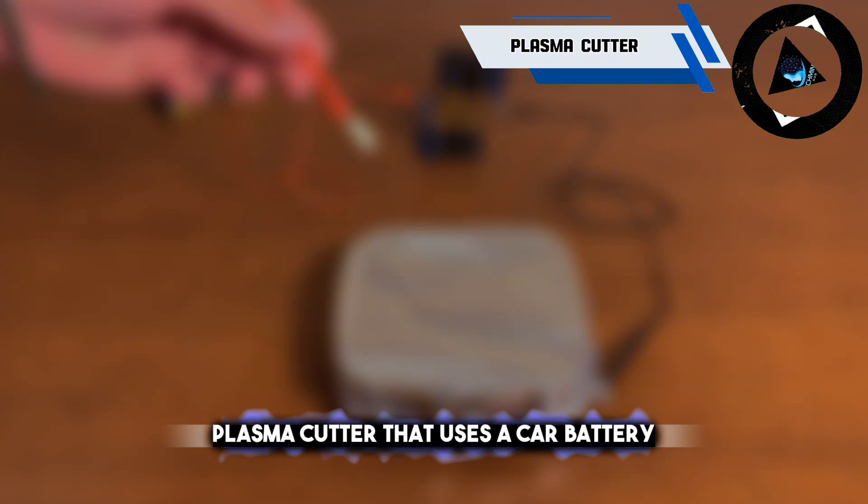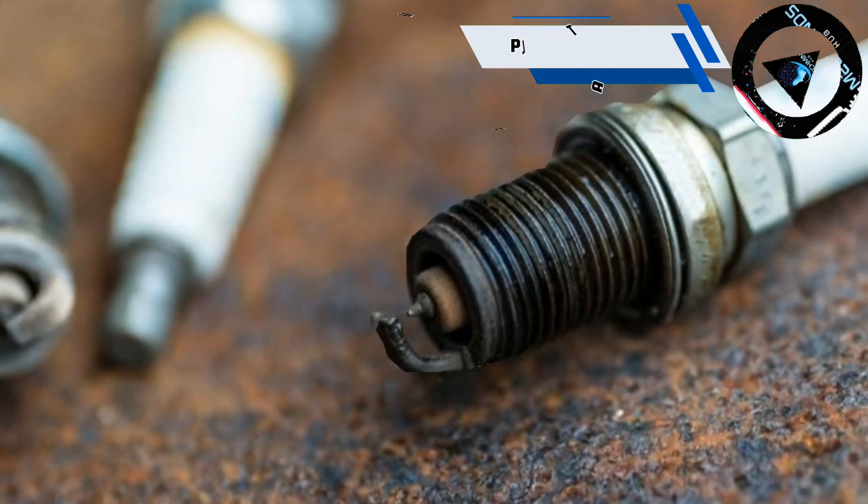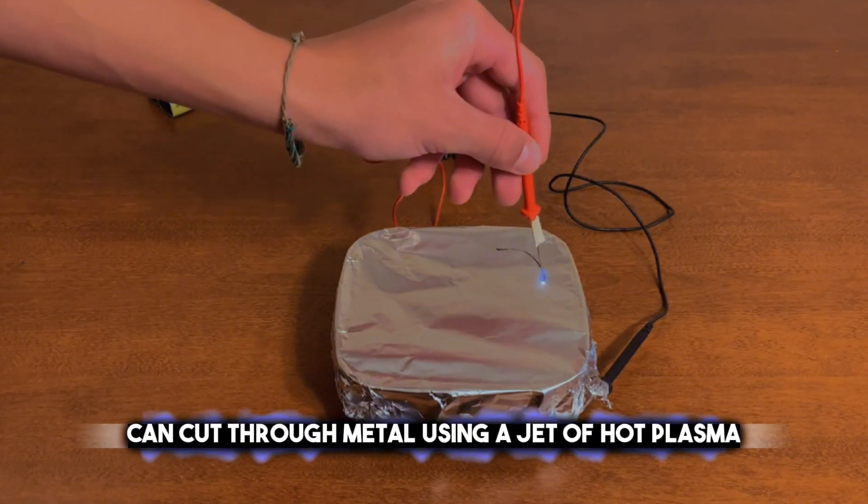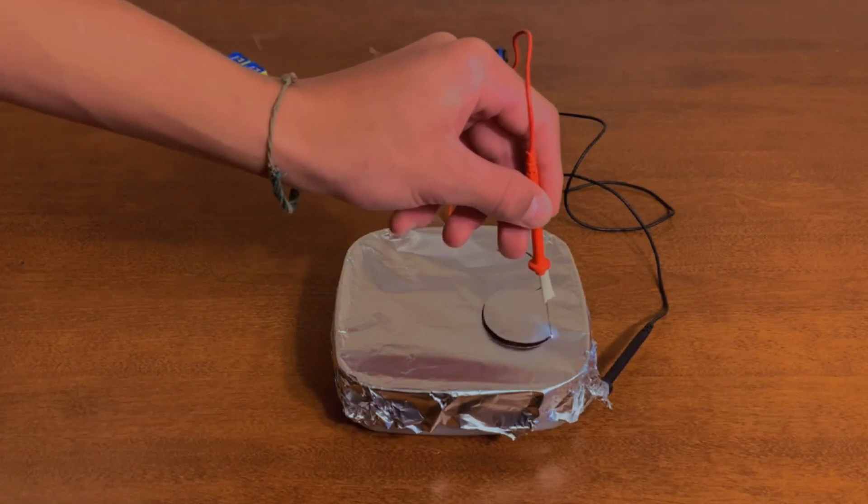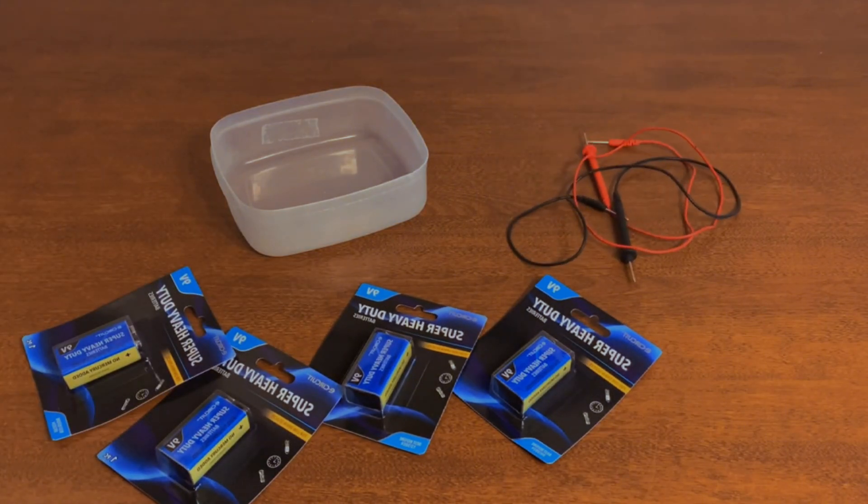This one is a plasma cutter that uses a car battery and a spark plug. A plasma cutter is a type of welding machine that can cut through metal using a jet of hot plasma. Plasma is a state of matter that consists of ionized gas, which can conduct electricity and generate heat.